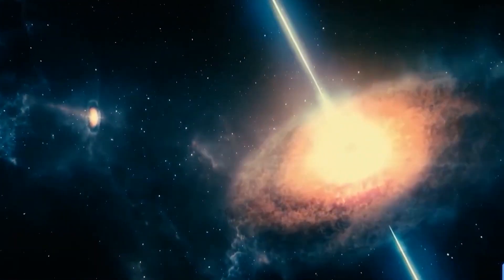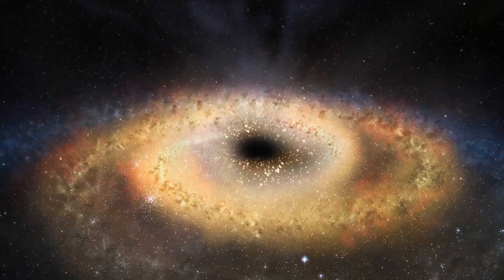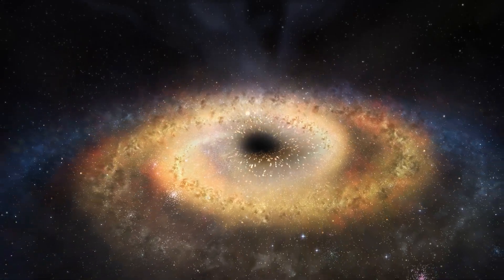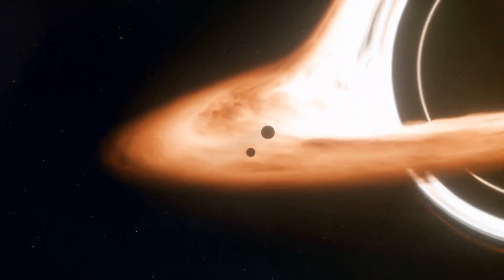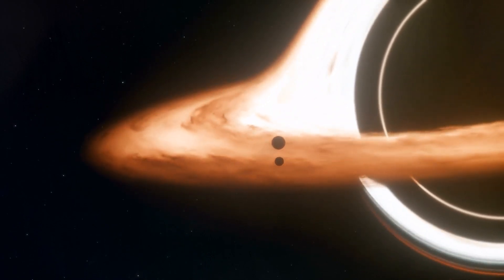Imagine a bowling ball sitting on the surface of a trampoline. Smaller items are drawn into the dip by the surface sagging caused by the ball. Black holes produce a void in space-time that is almost hard to comprehend since they have an infinite density.